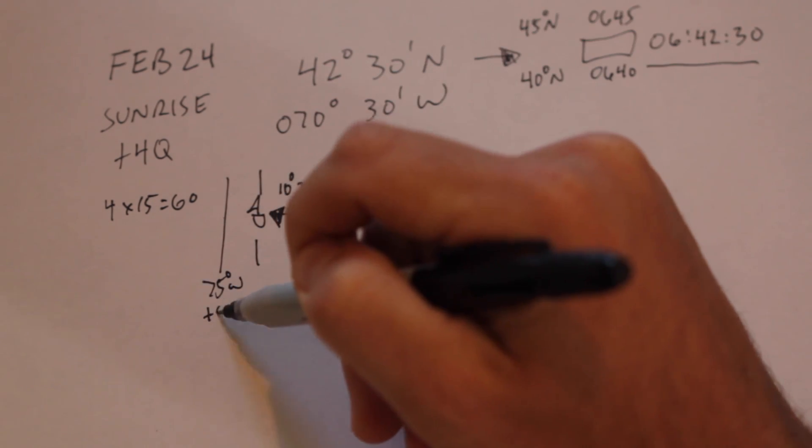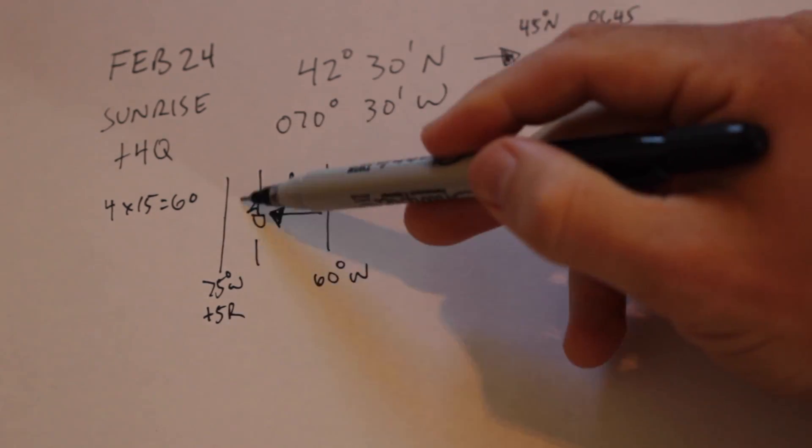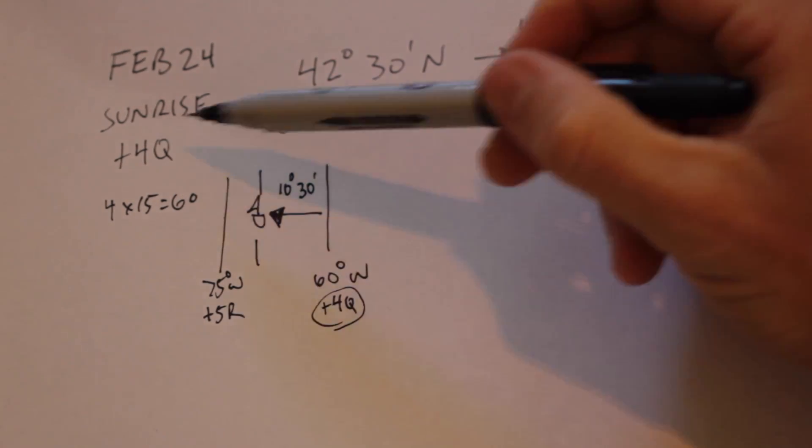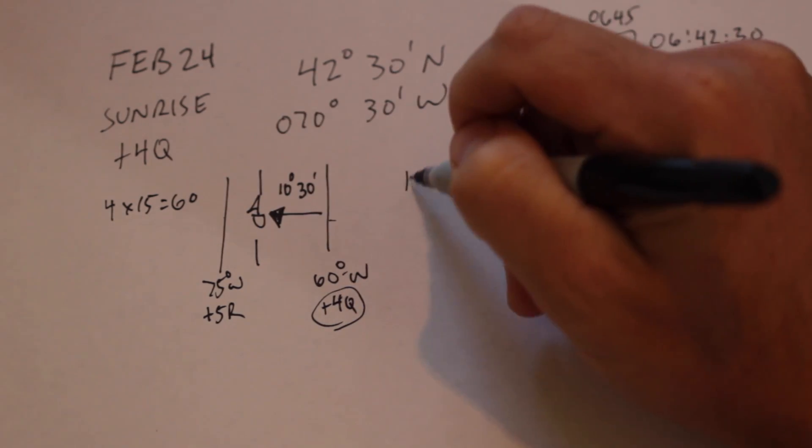However, we are observing the time zone of 60 degrees west on our clocks, so it is easier to do the calculation for that meridian. Then you don't have to worry about daylight savings time or anything like that.